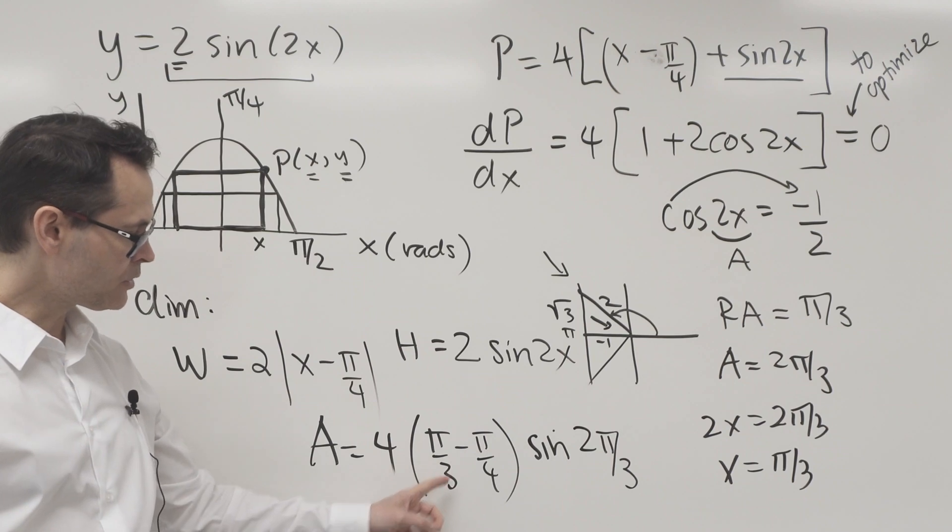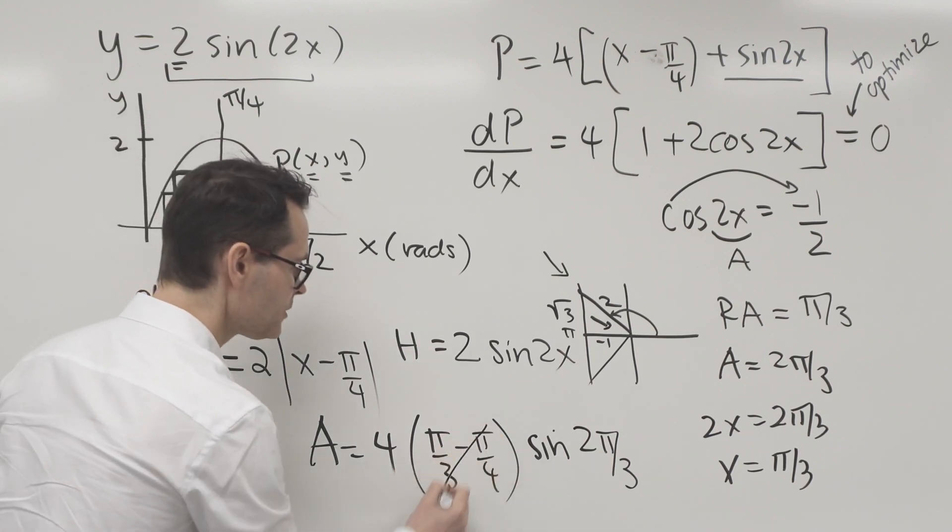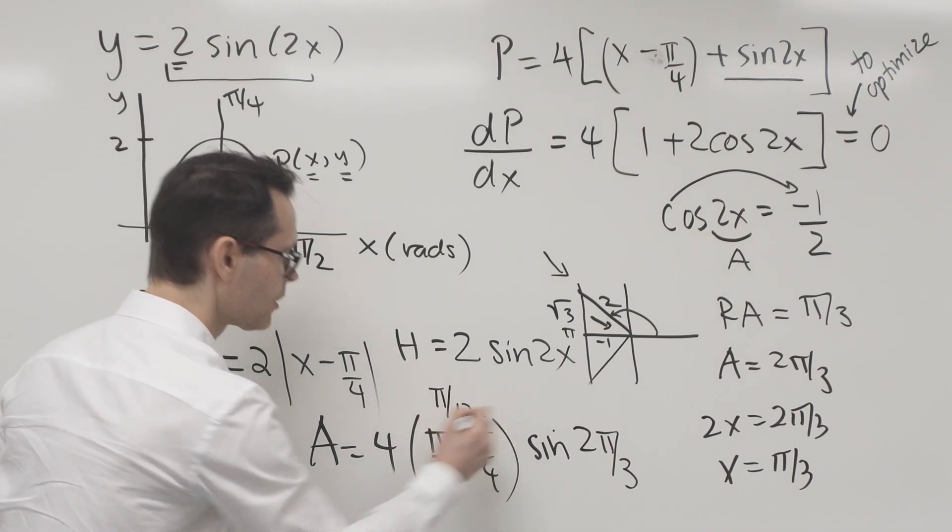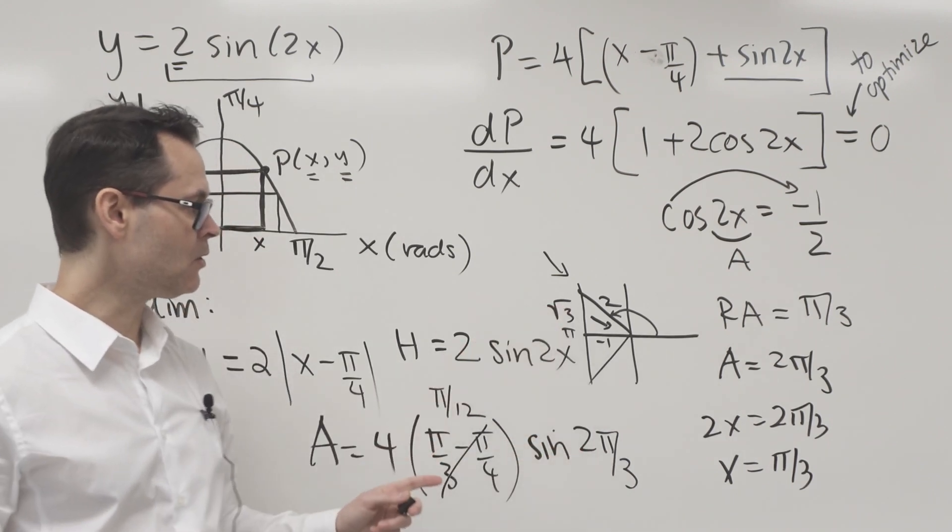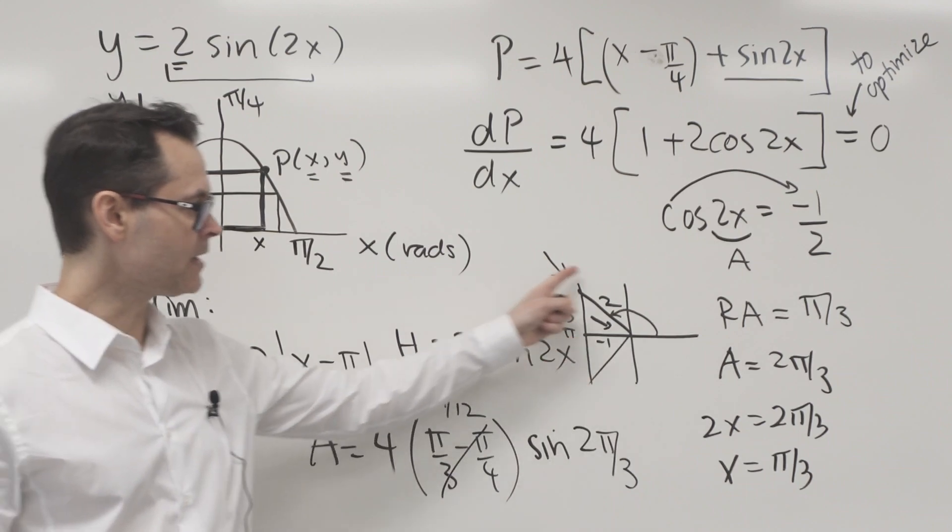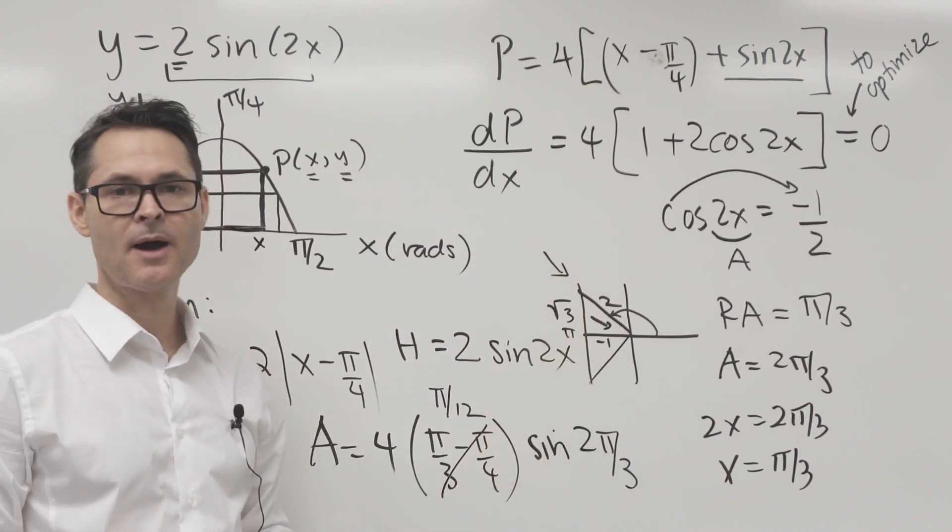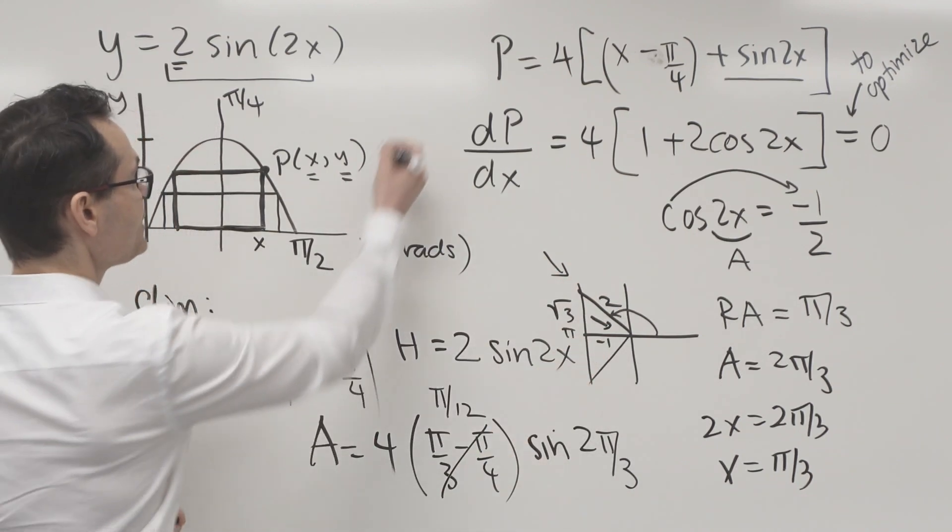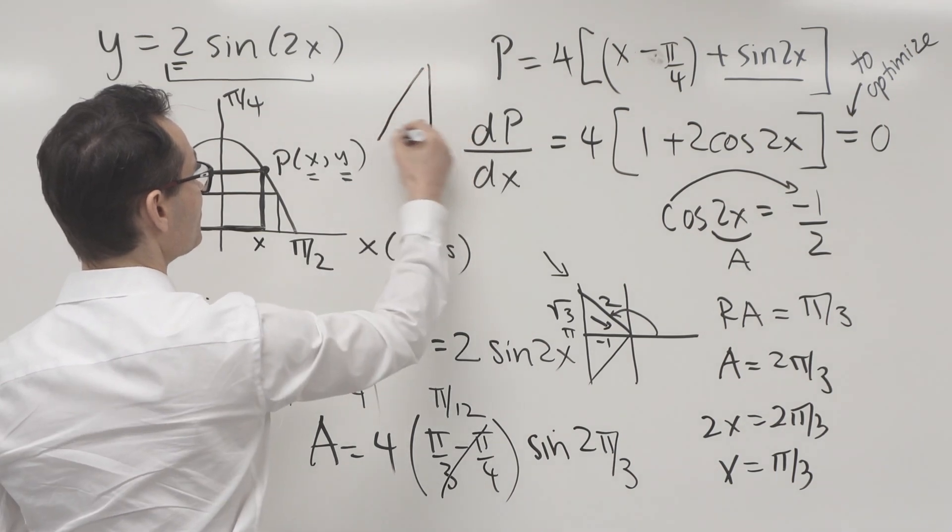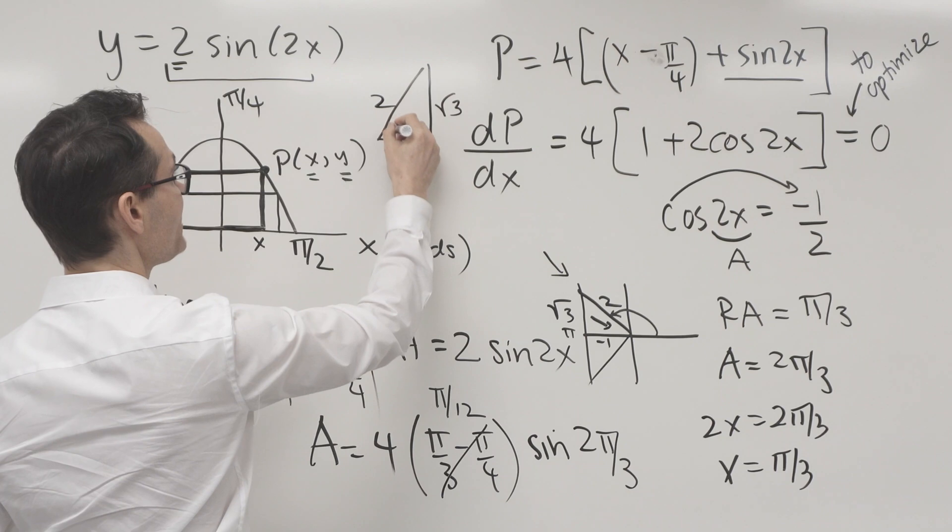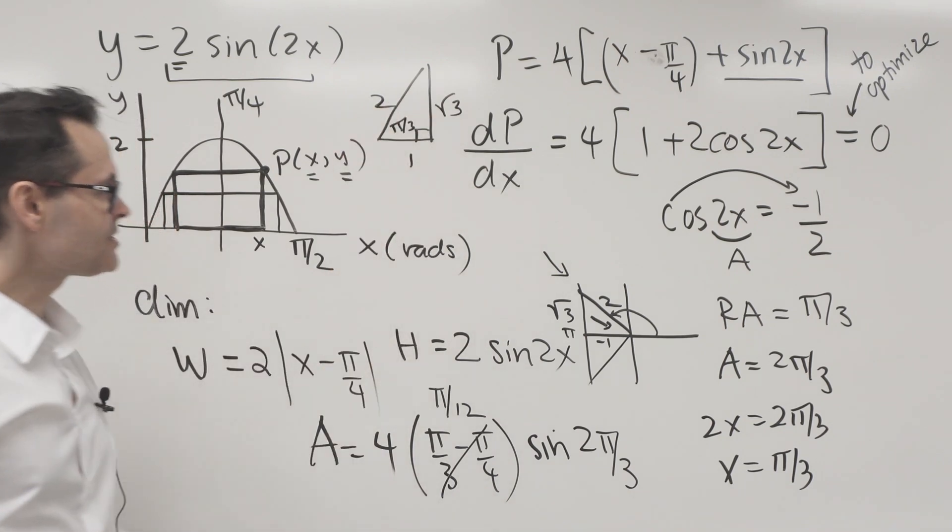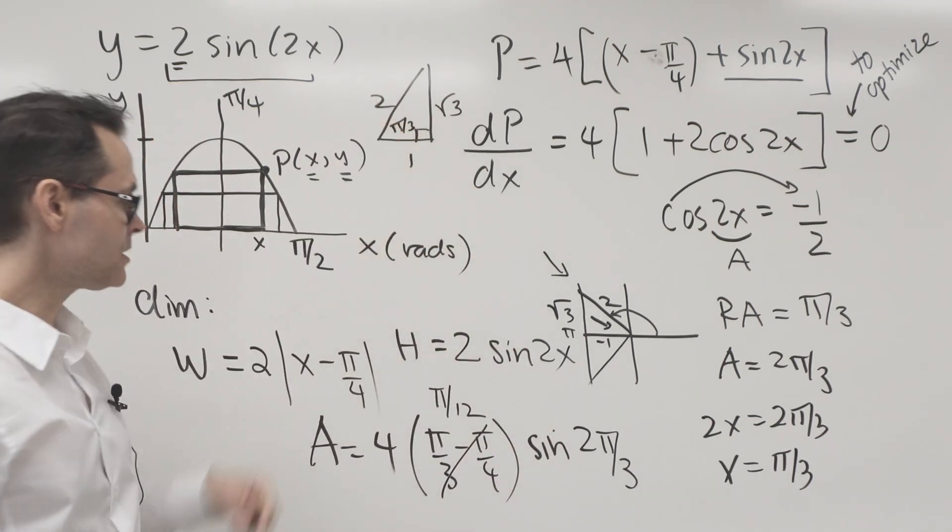And this is pretty trivial at this stage. I know that pi over three minus pi over four is pi over twelve. And the sine of two pi over three, two pi over three is in the second quadrant as we know, we know that sine is positive there, meaning that's equivalent to the sine of pi over three. And I can use my special triangle: one, two, root three. That's pi over three. So the sine of pi over three is root three over two.